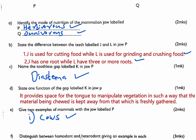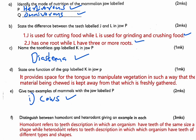Part F asks: distinguish between homodont and heterodont, giving an example in each case — three marks. Homodont refers to a dentition in which an organism has teeth of the same size and shape. Heterodont refers to a dentition in which organisms have teeth of different types and shapes. An example of homodont is a dolphin, whose teeth are of the same shape and size. An example of heterodont is carnivores — such as cats, dogs, or lions — which have teeth of different shapes and sizes. We score those three marks.